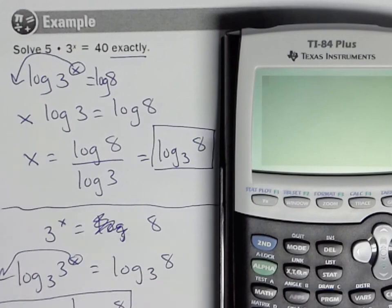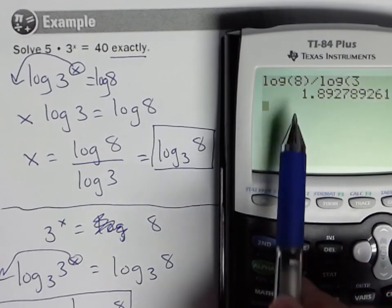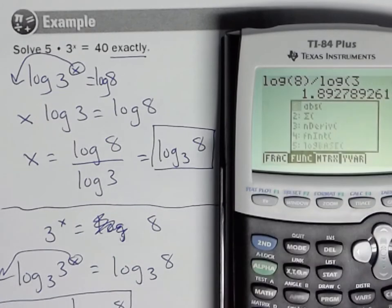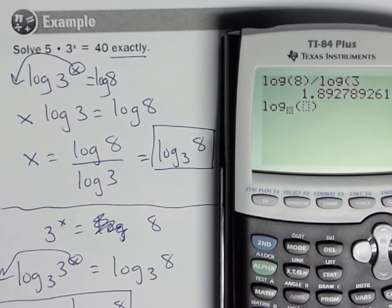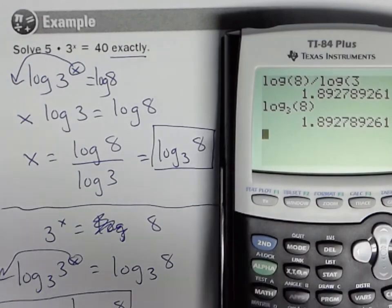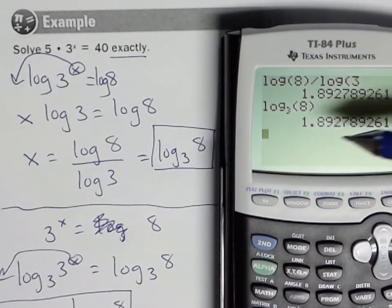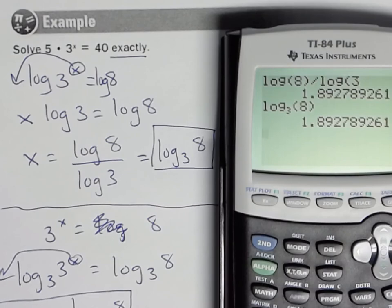But I'll just type this in: log 8 divided by log 3, and we get 1.89. Again, you could do—if you've got the buttons—you could do log base 3 of 8 directly, and notice you'll get the exact same answer. So depending on how many decimals they asked me to round it, you could round this one. Again, but this one did ask for exact. I'm just showing if we needed to approximate it.